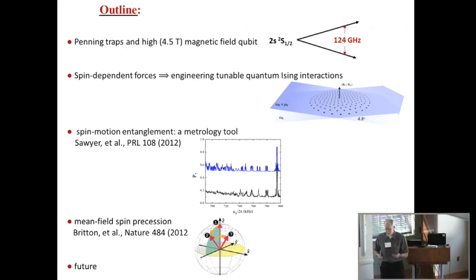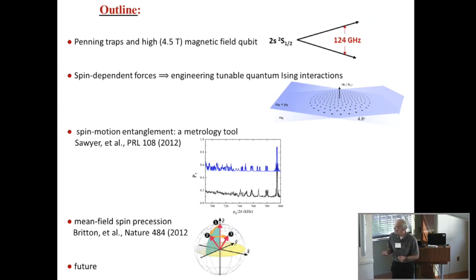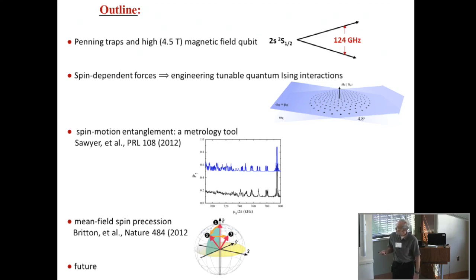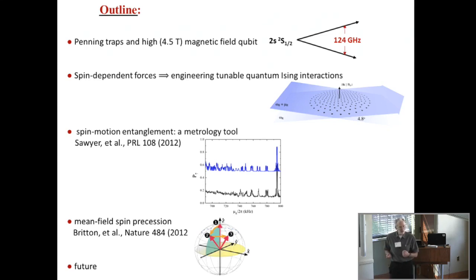I'm not going to give any motivation for quantum simulation — Phil did that a little bit in the last talk. I'm going to jump in and say something about penning traps, because I think most people here understand RF traps really well but the penning trap not quite as well. The name of the game with trapped ions is to use spin-dependent forces, which engineers tunable Ising interactions. I'll say how we implement those spin-dependent forces, and also discuss spin-motion entanglement, which is a useful metrology tool for us, and then how we benchmark the interactions and where we're going in the future.